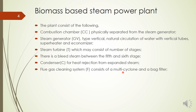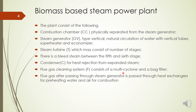A flue gas cleaning system is used before supplying flue gas to the atmosphere, with the help of a cyclone separator and bag filter, for reducing emissions. The flue gas, after passing through the steam generator, is passed through the heat exchangers for preheating the water and air for combustion. These are some of the components used in this biomass-based steam power plant.